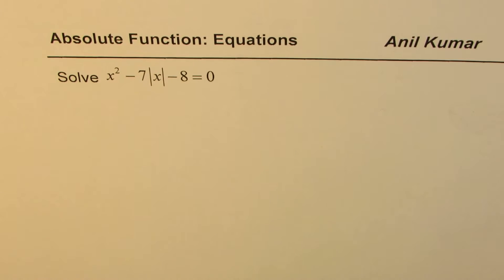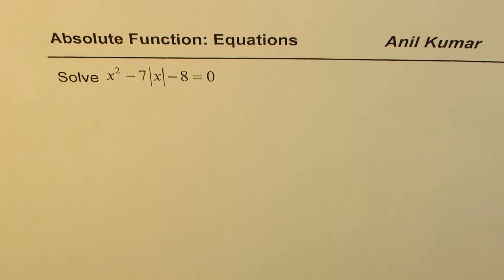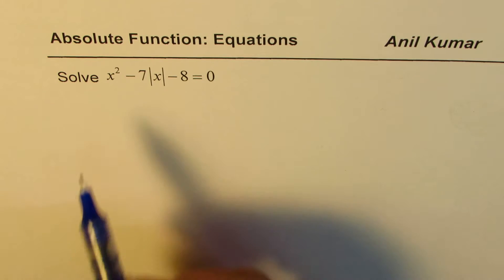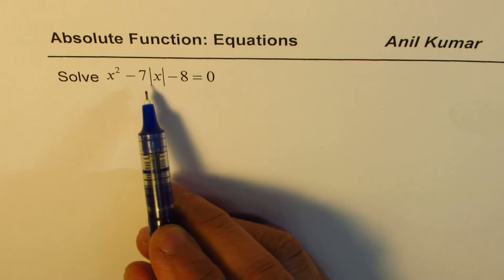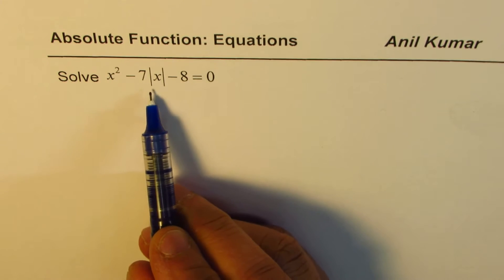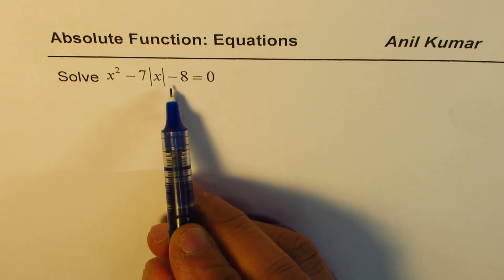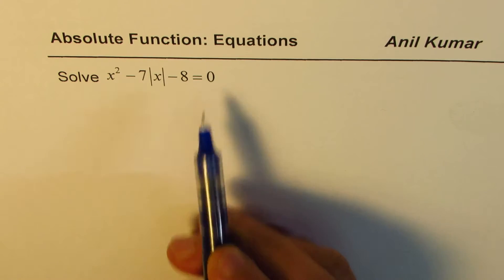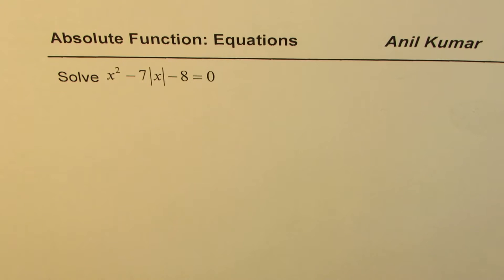I'm Anil Kumar, sharing with you some excellent questions on solving equations. This time, we have taken up absolute function. You need to solve x squared minus 7 absolute x minus 8 equals to 0.